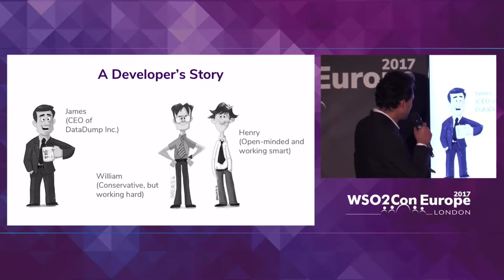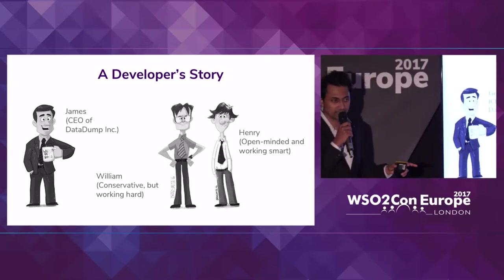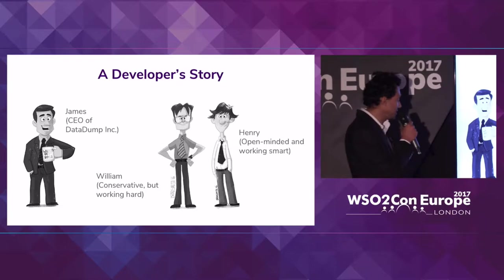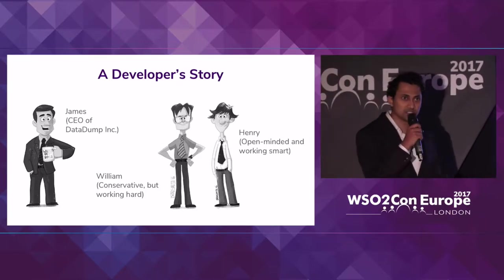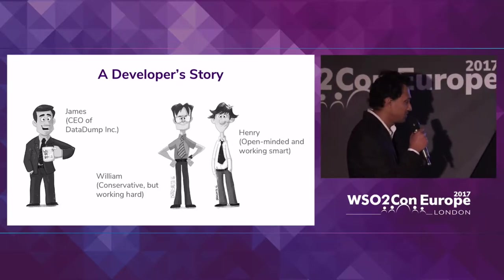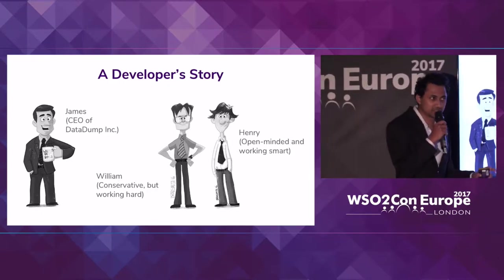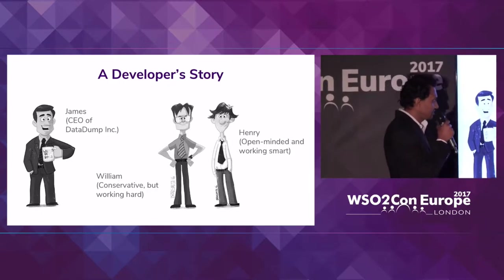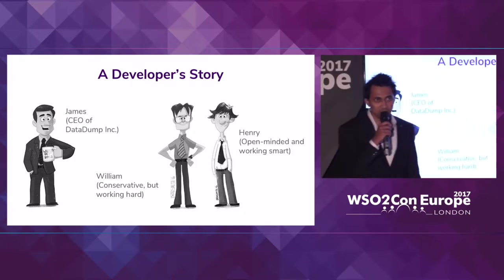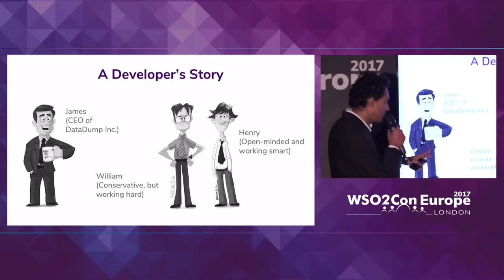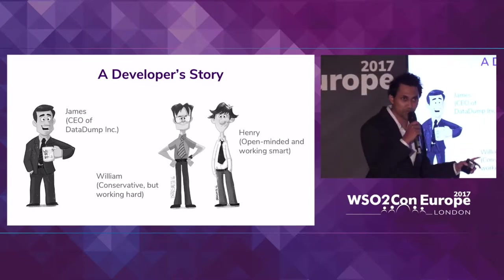In this company, you have James — he's the CEO of Datadump INC. And there's a developer called William; he's sort of a conservative guy but working hard. And there's another developer called Henry — same as William, but he's sort of an open-minded guy and working smart.